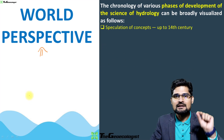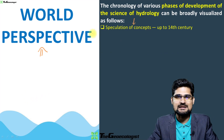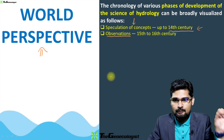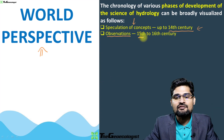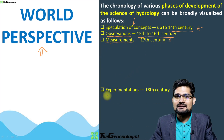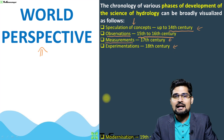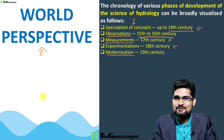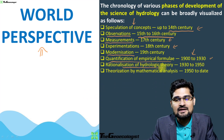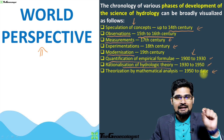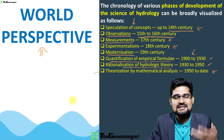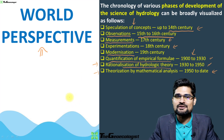From the world perspective, there are certain phases to understand. First is speculation of concepts, which continued until the Renaissance in Europe, around the 14th century. Then came observation in the 15th and 16th centuries, followed by hydrological measurements in the 17th century. Experimentation came in the 18th century, and the 19th century saw modernization of hydrological science. From 1900 to the 1930s, empirical formulae were quantified; by the 1950s, rationalization of hydrological theory occurred. Since 1950s till present, we observe mathematical analysis, theorization, and use of new technology — satellite technology and computer technology.